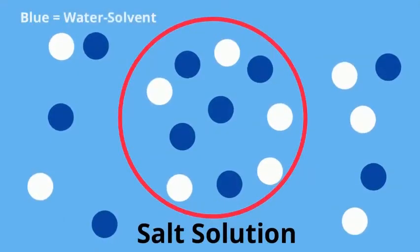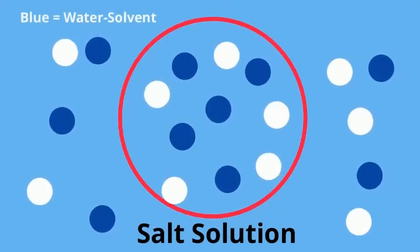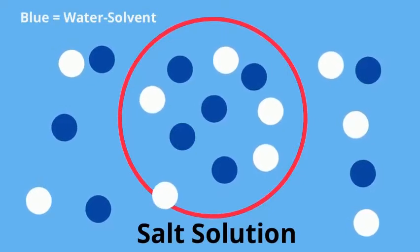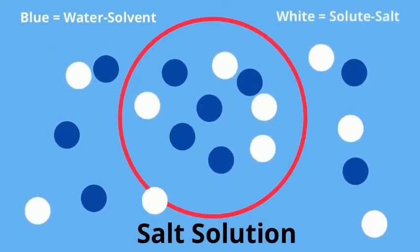Now, in our example, we are going to use salt water. In the example, the blue circles are the solvent water, and the white circles are the solute salt.